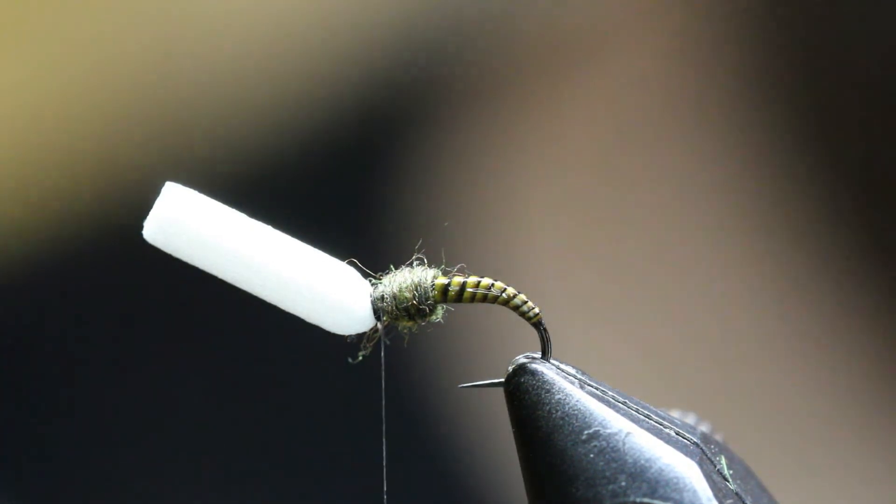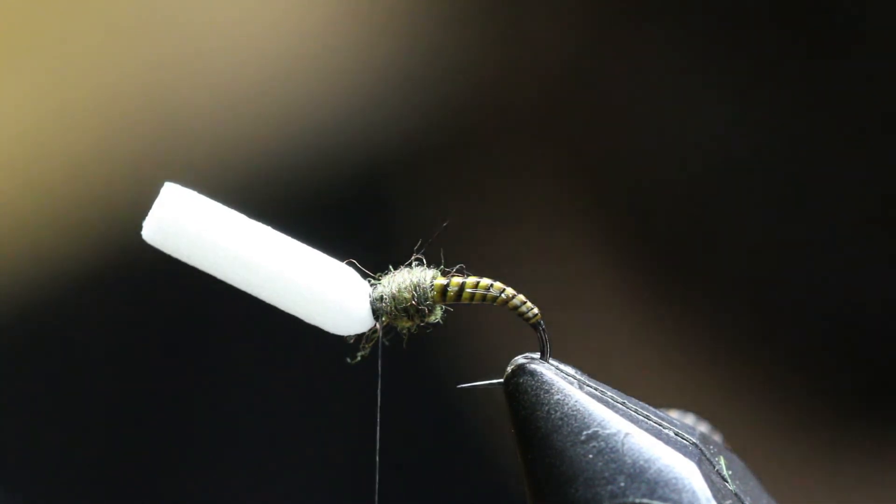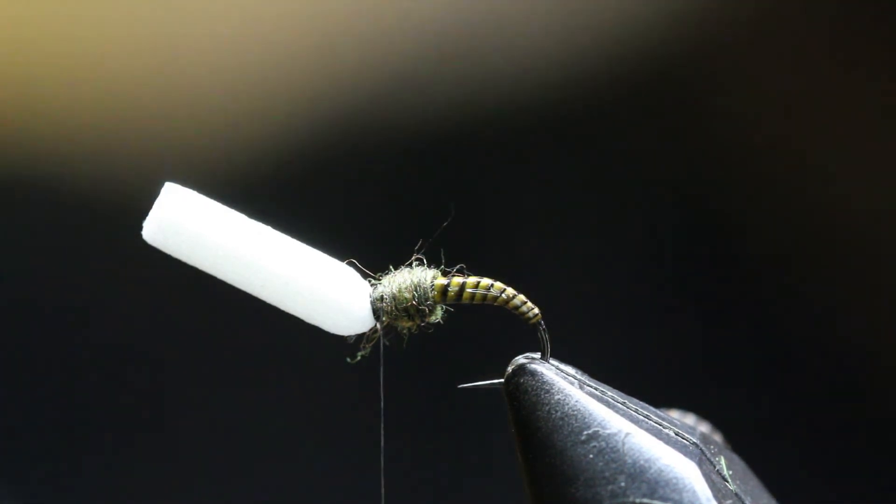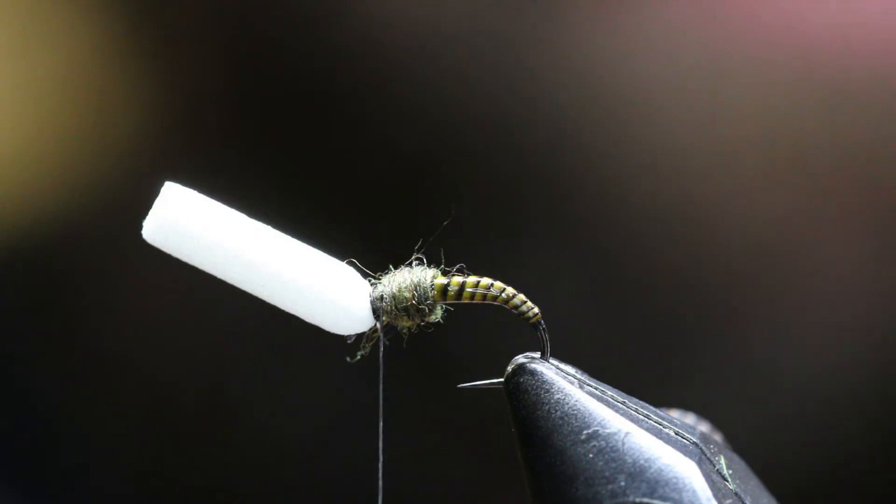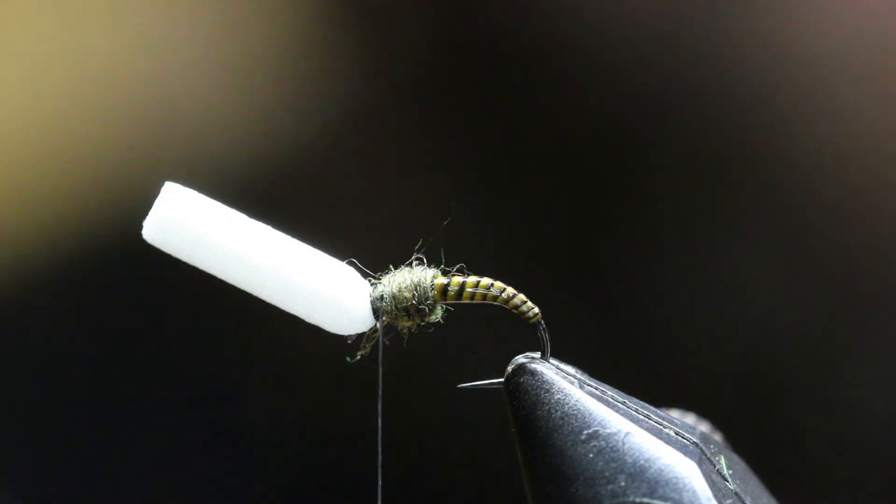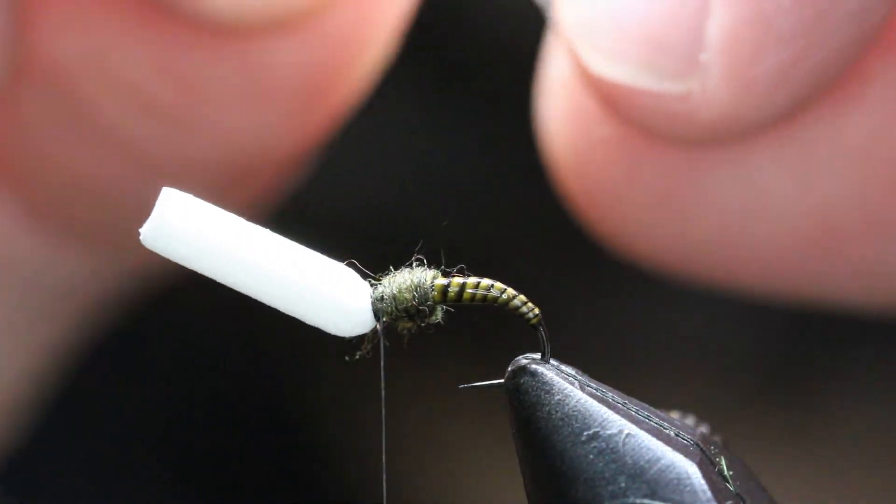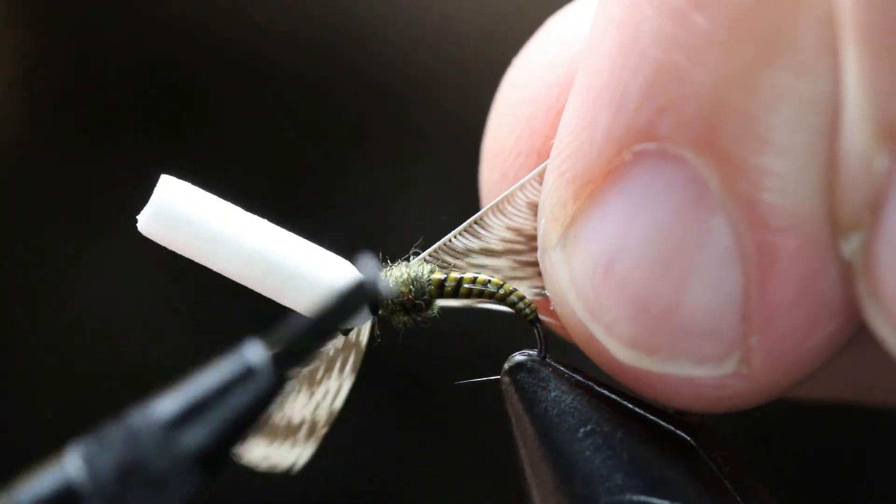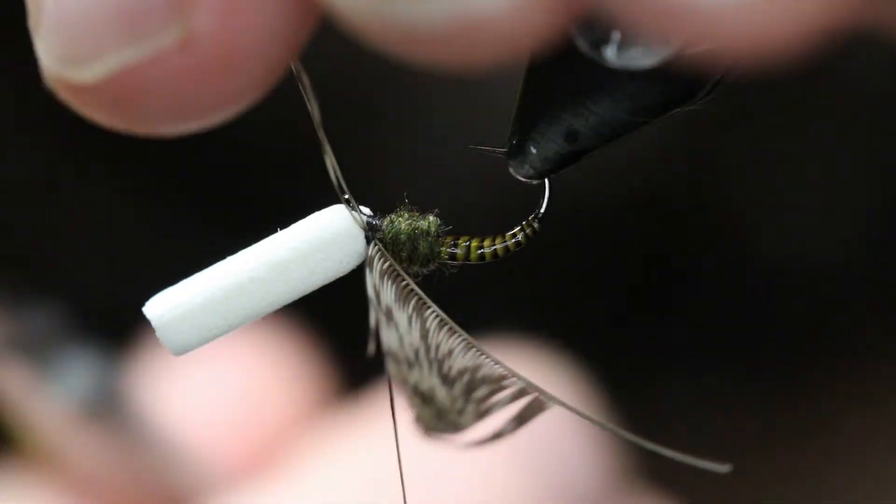Now that we got room for our soft hackle, I'm using some Brahma Hen, and this stuff is my preferred material over partridge, just because it's easier to use, more size variation. I find that partridge is normally longer than I would like for most patterns. So you prep it, you strip one side, leave the other, stroke the fibers back so you got this set up here. One, two wraps in back, pull it back, two wraps in front and trim this part.